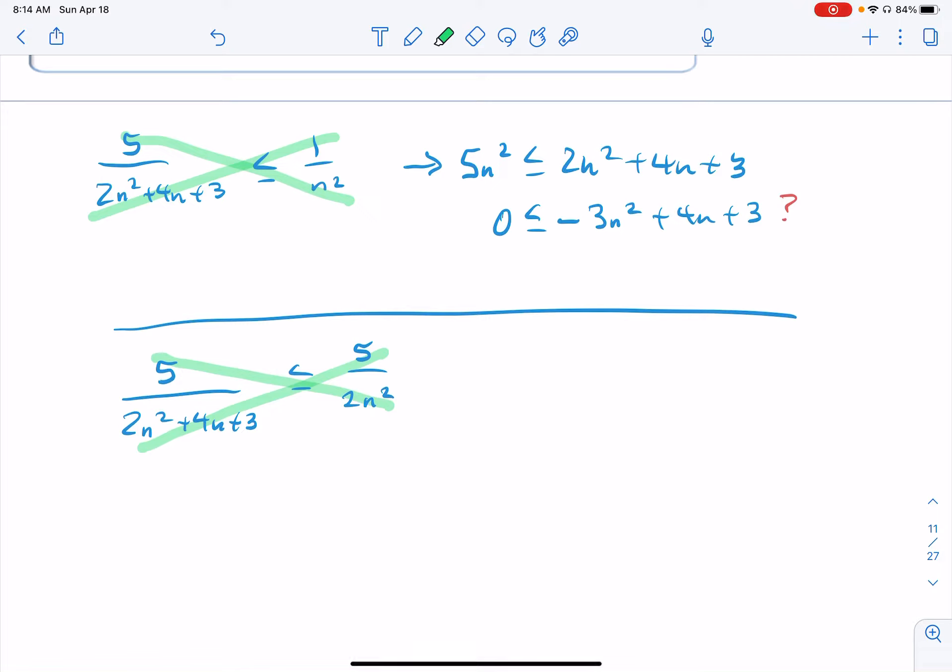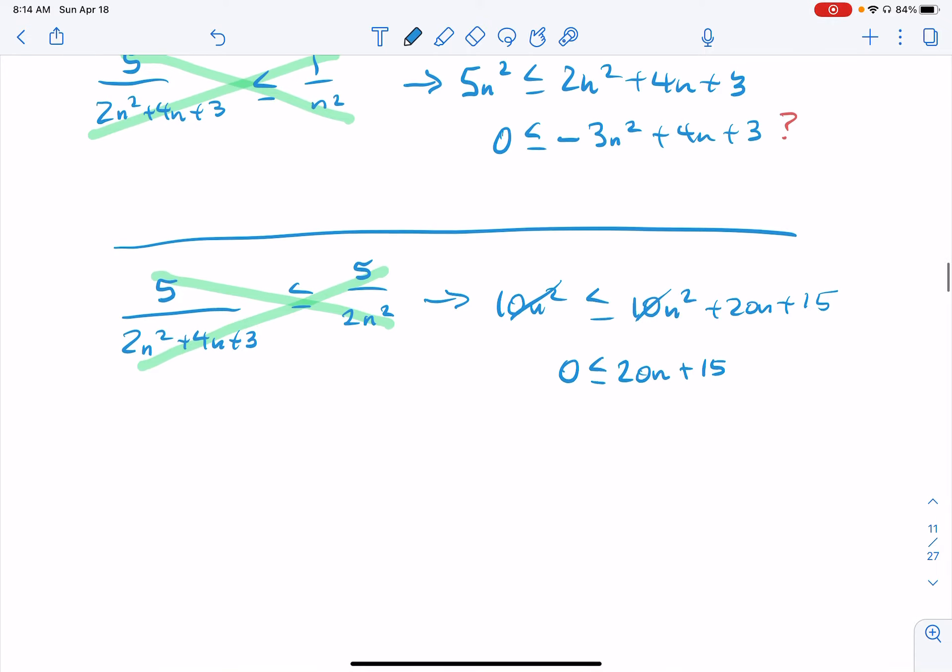So 10n² on the left side is less than or equal to, multiply everything by 5 here, 10n² + 20n + 15. Subtract off your 10n², you have 0 is less than or equal to 20n + 15. This is definitely true, remember that n starts at 1 and just gets bigger, so all of these numbers are always positive. So this is definitely true for n ≥ 1, which is what I need.